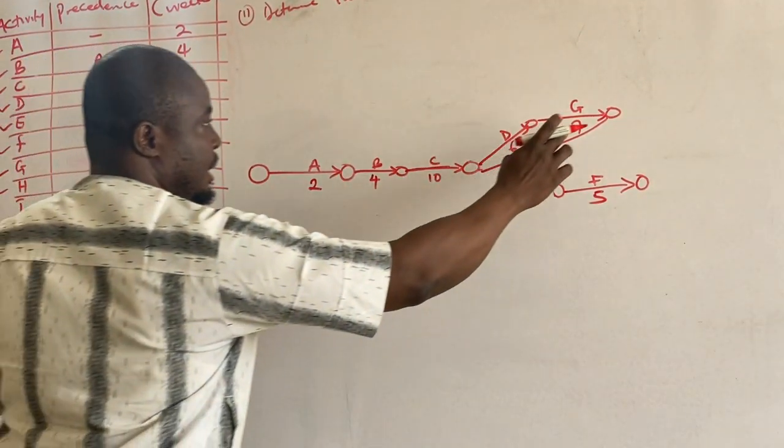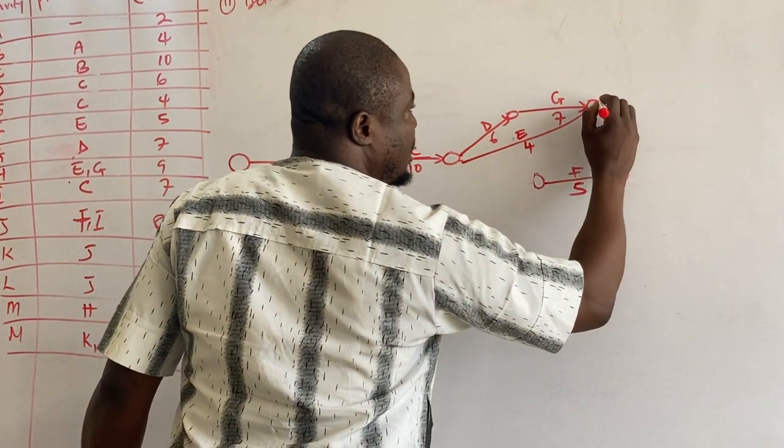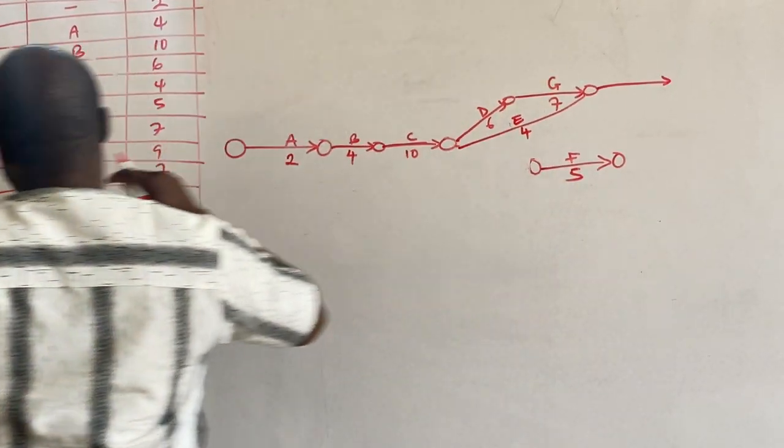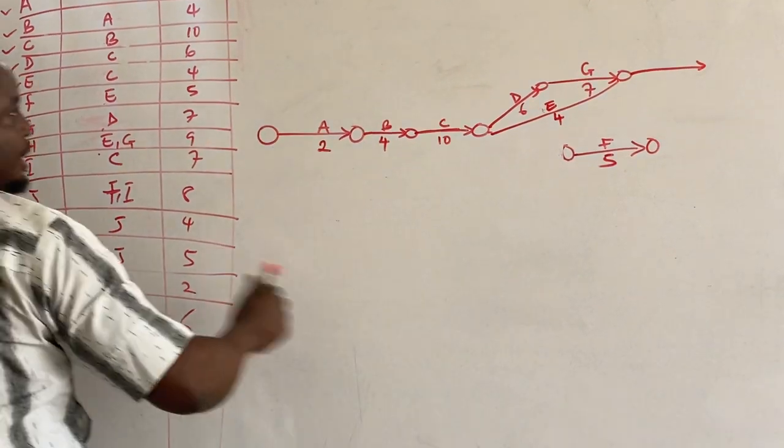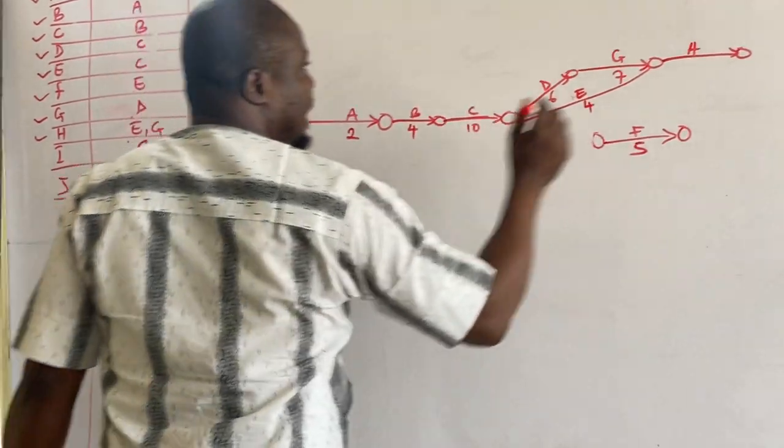E and G will form, E and G are merged together to form what? H. So you have an H here. And H is at what? It's at nine.